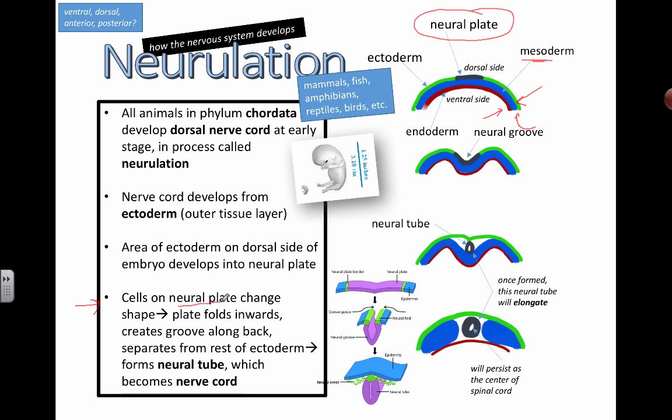So cells on the neural plate change shape. We've got folding inwards. You start to get this little groove. Separates from the rest of the ectoderms. You can see that here it's starting to form its own little kind of unit that's separating from the green layer that I've colored here.